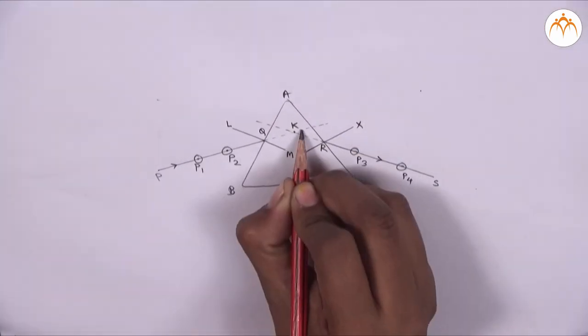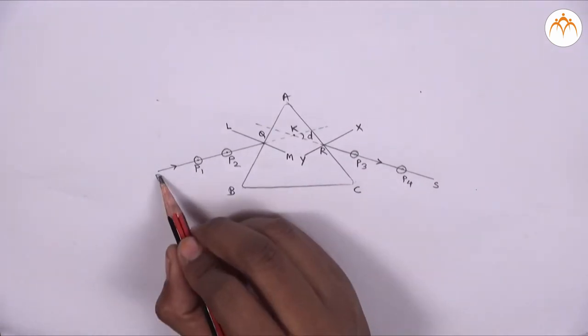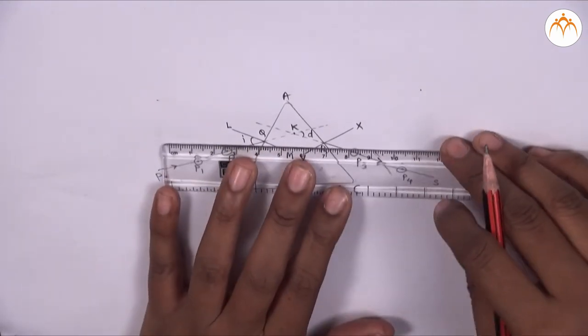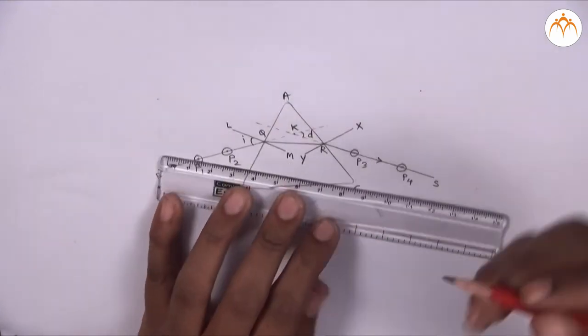Measure the angle between these two rays PQ and SR which is angle of deviation D. Angle PQ is angle of incidence. Angle MQR is angle of refraction and angle SRY is angle of emergence.